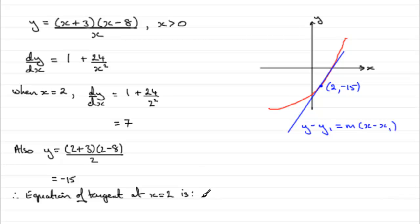It's going to have this format but we just need to substitute our values in. It's going to be y minus y1 which is y minus minus 15, so that's plus 15, equals m the gradient, so that's going to be the 7 here, bracket x minus x1, x minus 2.